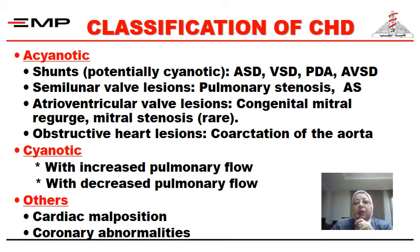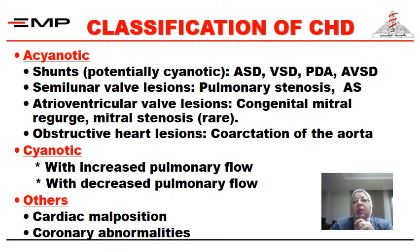How is congenital heart disease classified? It is classified into an acyanotic group, a cyanotic group, and other abnormalities. The acyanotic group, by far the most common, includes shunts or the potentially cyanotic lesions — because they can become cyanotic later, sometimes on exertion or later in life. These types are the atrial septal defect, the ventricular septal defect, the PDA, and the atrioventricular septal defect. We will discuss them today. Semilunar valve lesions include pulmonary stenosis and aortic stenosis.